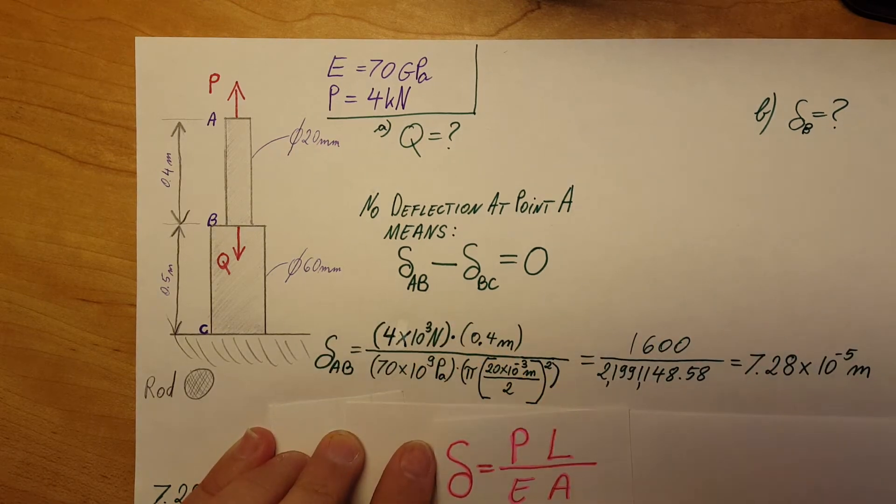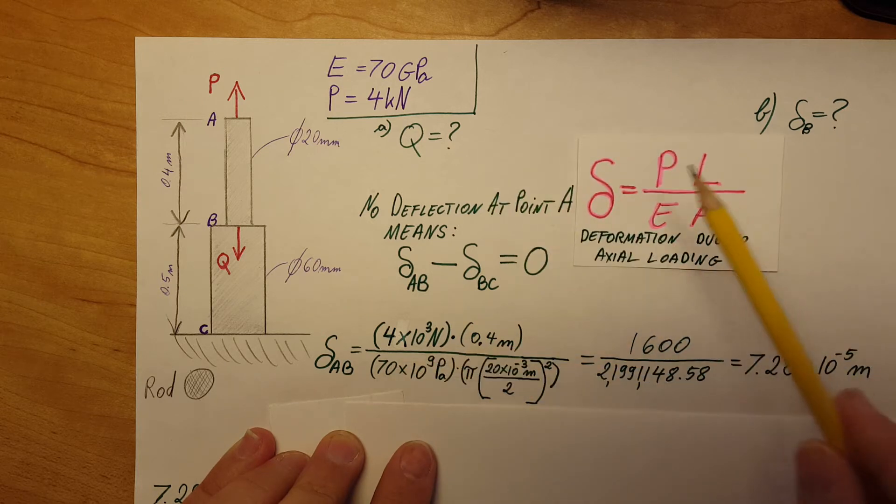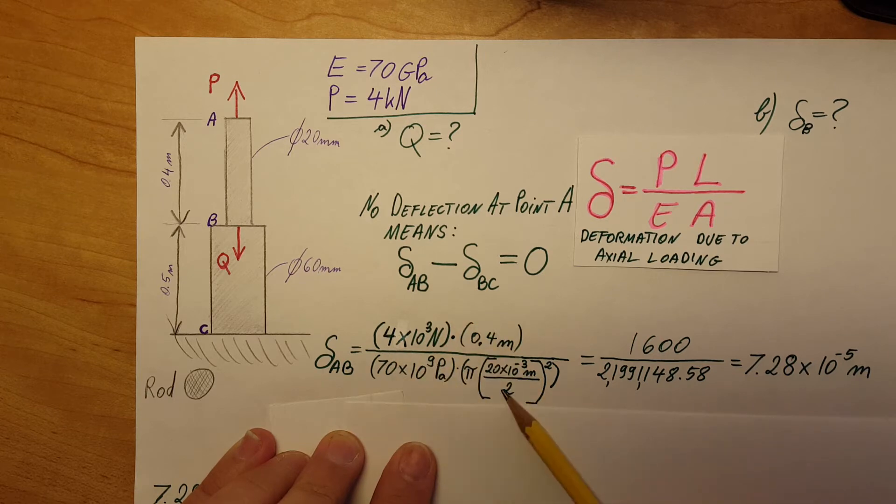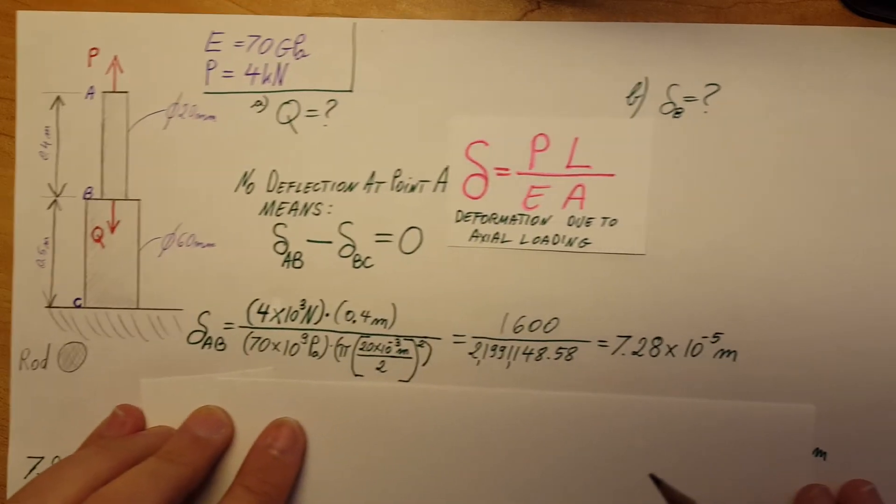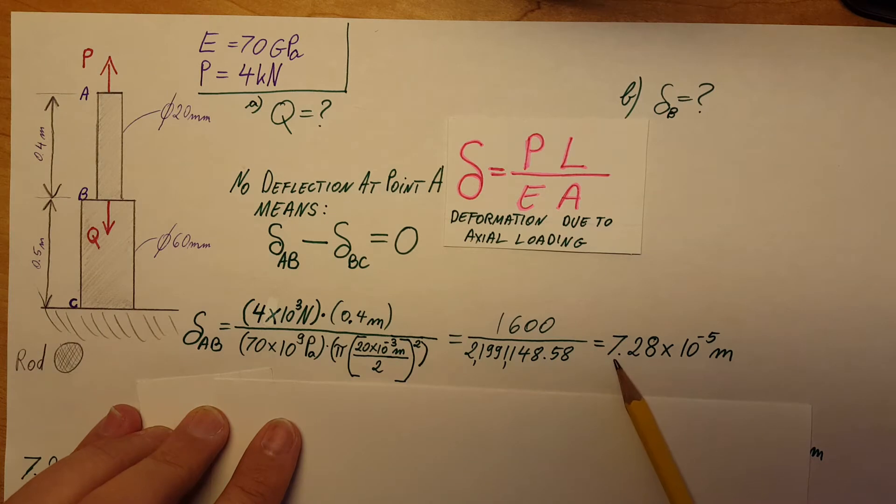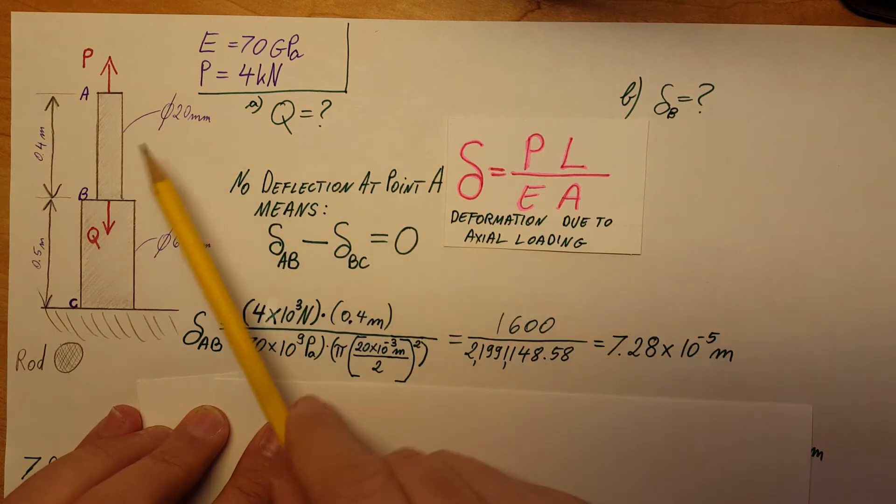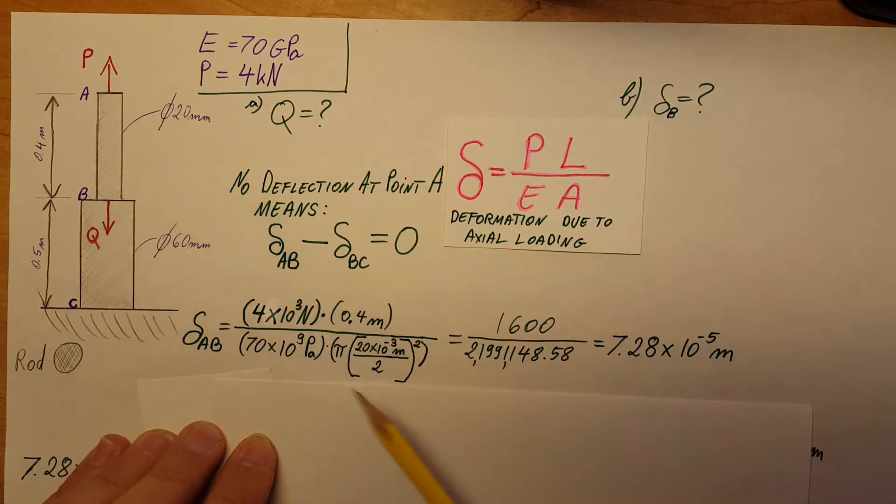We can see that we know every part of it: we know P, we know L, E, and A. Every single piece we know. We can fill it out and therefore find a nice value for it: 7.28 times 10 to the negative 5 meters.